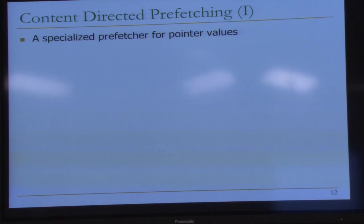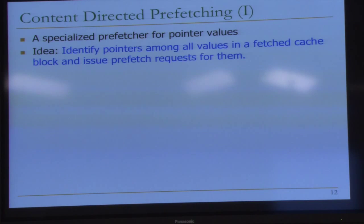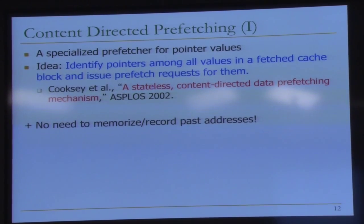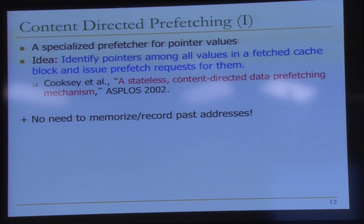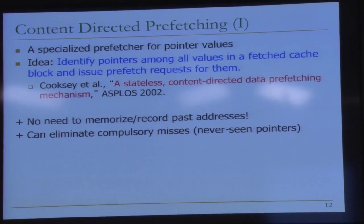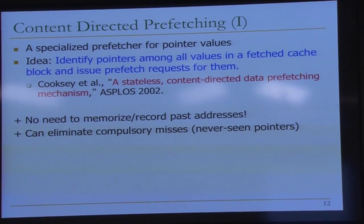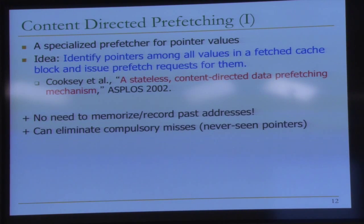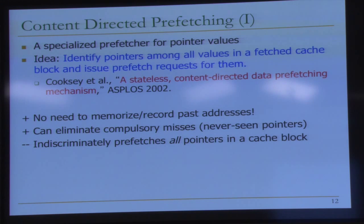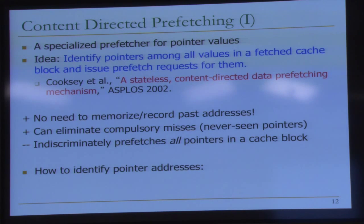Another idea to prefetch for pointers without the storage overhead is content-directed prefetching. Whenever you fetch a cache line, identify what values in that cache line look like pointers and issue prefetches for them. There's no need to memorize or record past addresses — this is stateless. It can also potentially eliminate compulsory misses for pointers you've never accessed, since you prefetch a cache line and issue prefetches for pointer-like values inside it before you've ever accessed them.